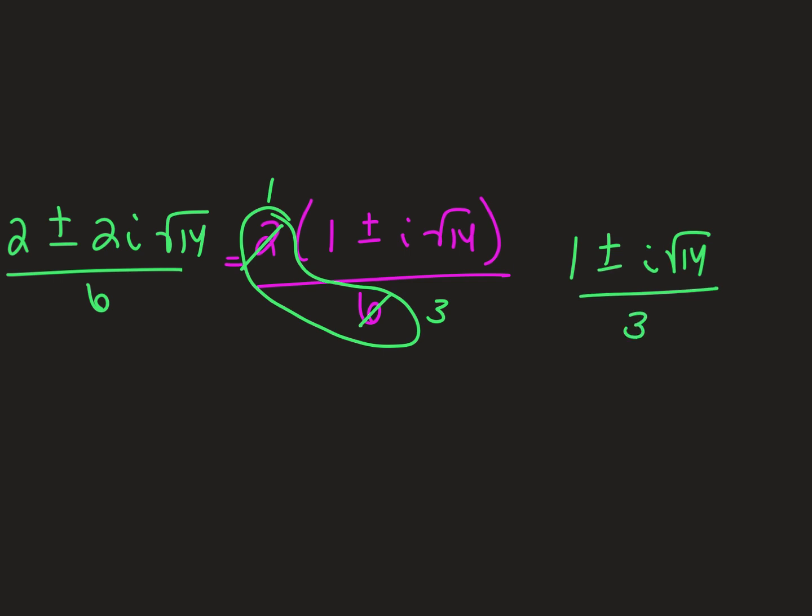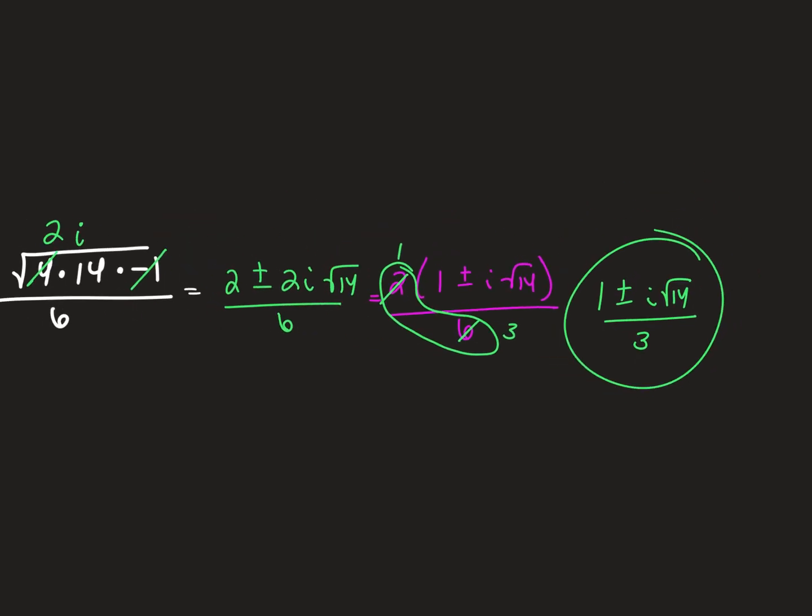There are two solutions, which we expected because x was raised to the second power. But neither can be placed on a graph — they're both imaginary. On your test, if you're working a problem and you expect imaginary answers but end up without an i, go back because you missed a sign somewhere. You can also separate the solutions as 1 third plus i root 14 over 3, and 1 third minus i root 14 over 3.